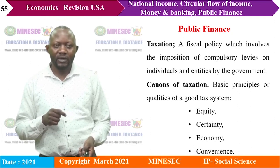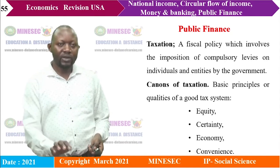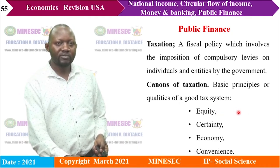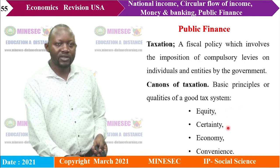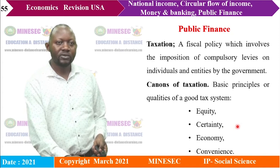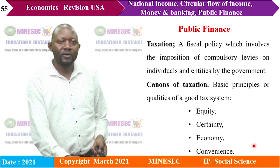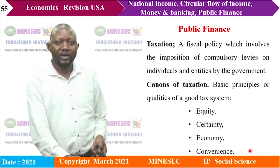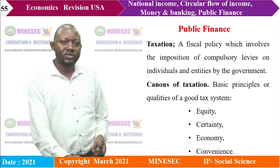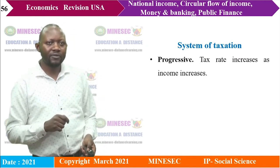The main canons of taxation include: equity — a good tax should be based on people's ability to pay (horizontal or vertical equity); certainty — taxpayers should know exactly how much, when, and how they are paying; economy — the cost of collecting the tax should not exceed the revenue it generates; and convenience — payment timing should be appropriate for taxpayers (e.g., farmers should pay after harvest).